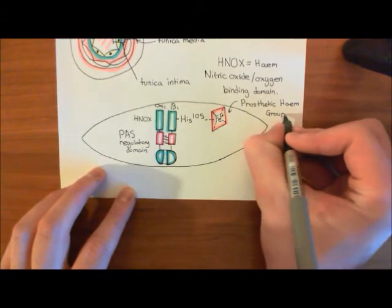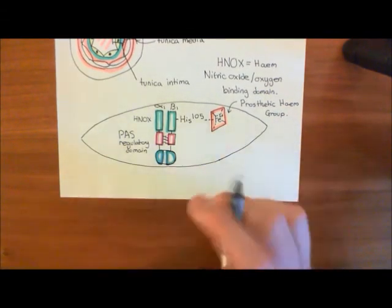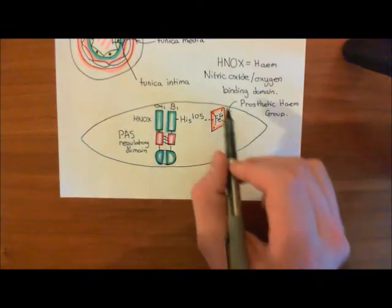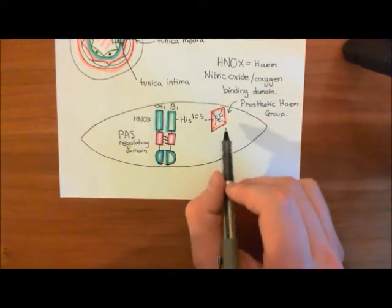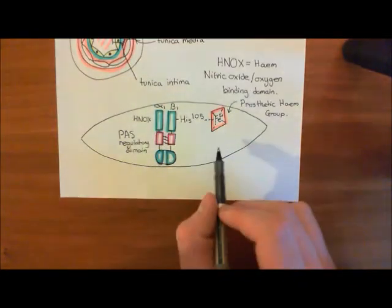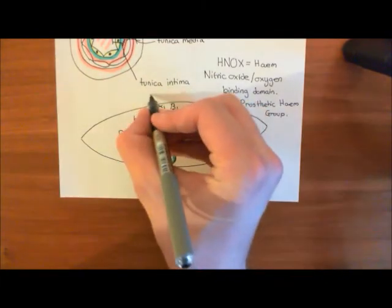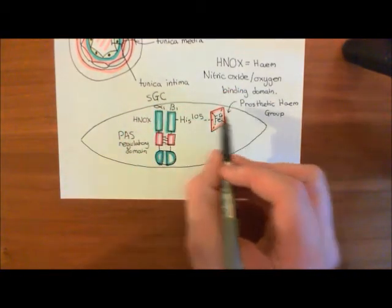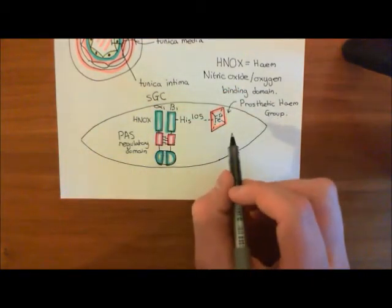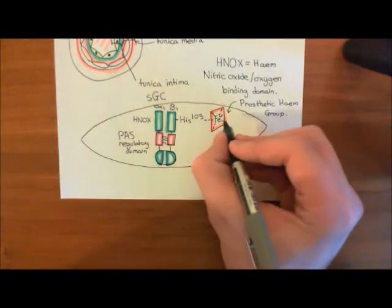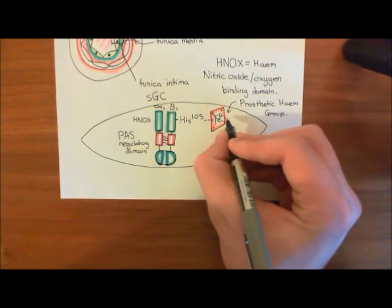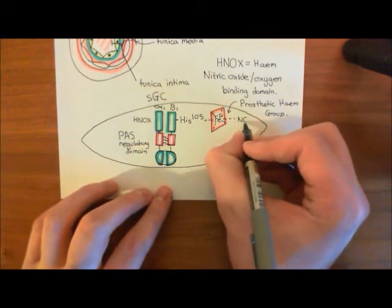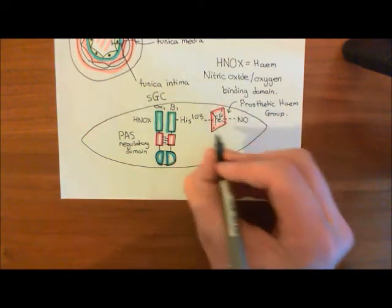Okay, now, when nitric oxide arrives from the endothelium, it diffuses across this phospholipid bilayer of the smooth muscle cell and into the cytoplasm of the smooth muscle cell. It then finds this soluble guanylate cyclase enzyme, which is usually just abbreviated as SGC for soluble guanylate cyclase. It finds that in the cytoplasm of the cell, and it then forms the sixth coordinate bond that this ferrous cation can support. So, here's our nitric oxide molecule forming this sixth coordinate bond.